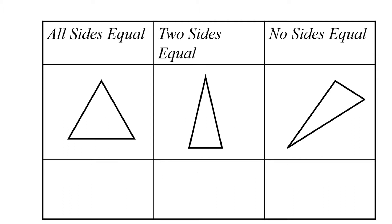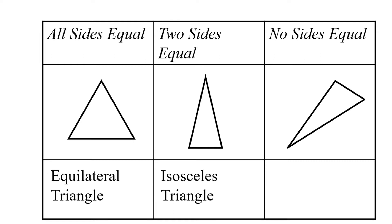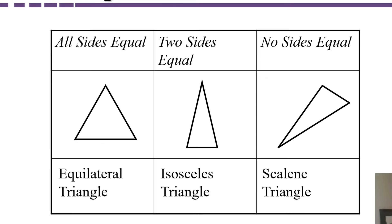Another way to categorize triangles is by the lengths of their sides. If all sides are equal, it's called an equilateral triangle. If only two sides are equal, then it's called an isosceles triangle. And if no sides are equal, do you know what that's called? That's right, it's a scalene triangle. So that's another way to categorize triangles by the lengths of their sides.